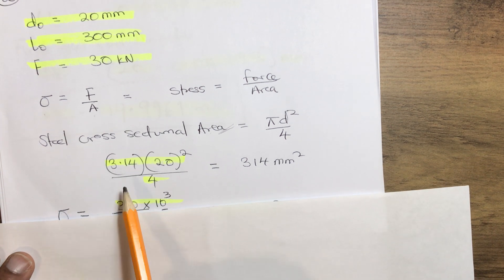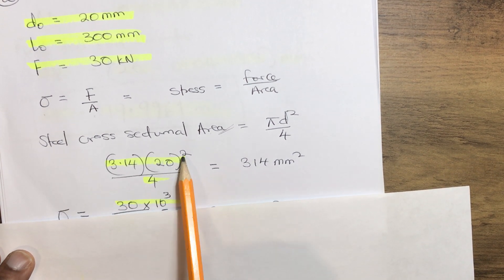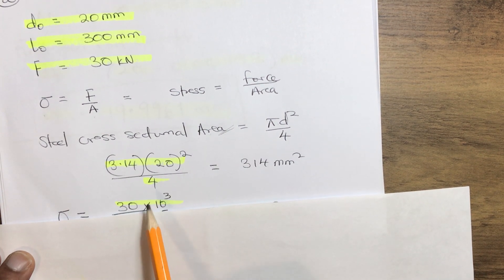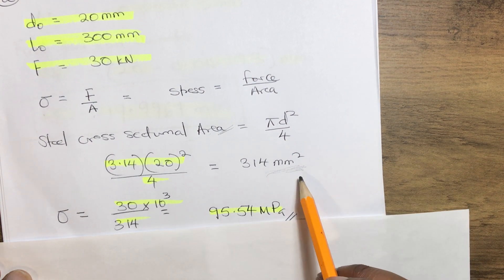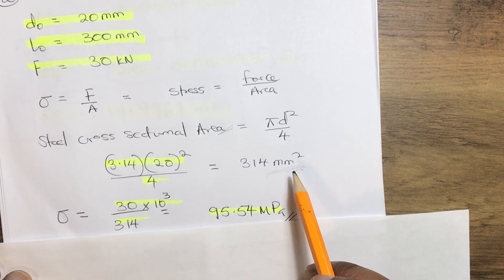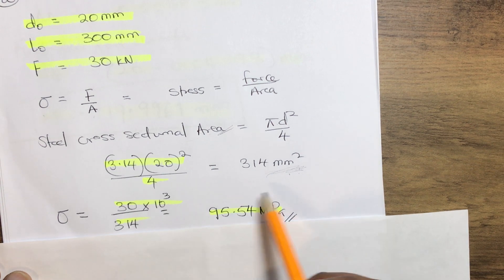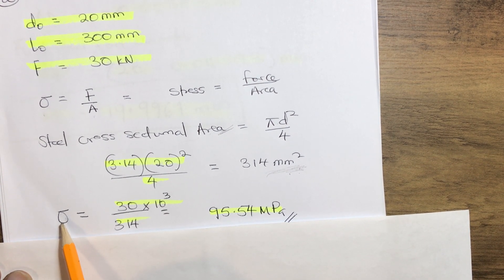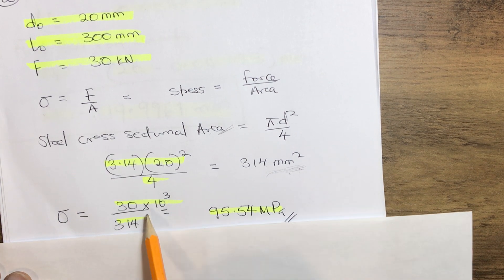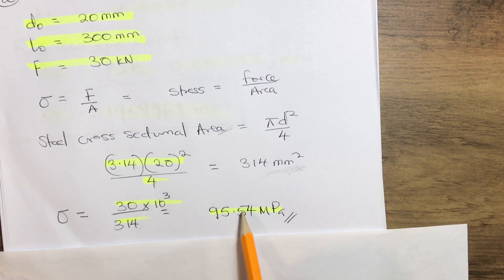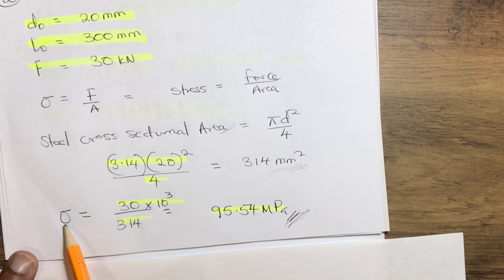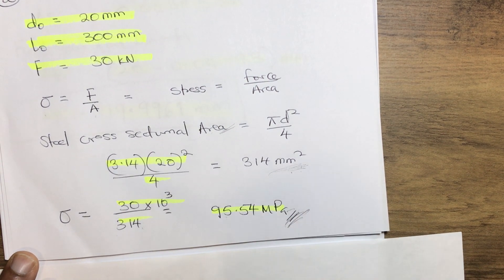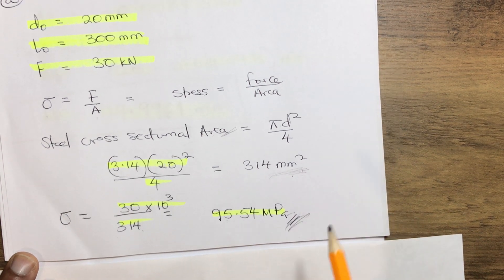Our cross-sectional area equals 3.14 multiplied by 20 squared, divided by 4, which gives us 314 mm squared — that is our steel rod cross-sectional area. Slotting into the stress formula, sigma equals F over A: 30 times 10 to the power 3 over 314, which gives us 95.54 mega Pascal.